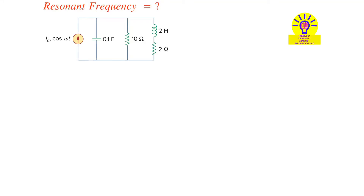In this problem, a current source is in parallel with three branches. In the first branch there is a capacitor, in the second branch there is a resistor, and in the third branch there is an inductor and resistor in series. For this circuit, what is the resonant frequency and how can you find it?